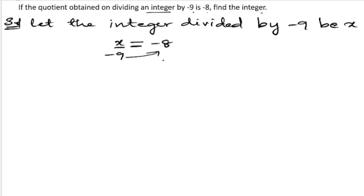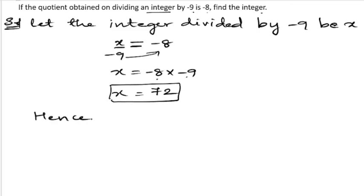send it to that side it will be in multiplication. So X is equals to minus 8 into minus 9. Hence, the required integer is 72.